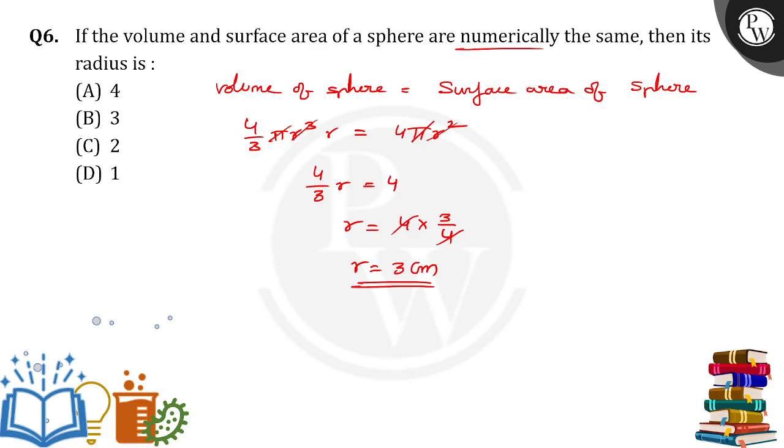Which means that if a sphere has a radius of 3 centimeters, then the volume of the sphere and the surface area of the sphere have the same numerical value. So option B is the right answer. Thank you.